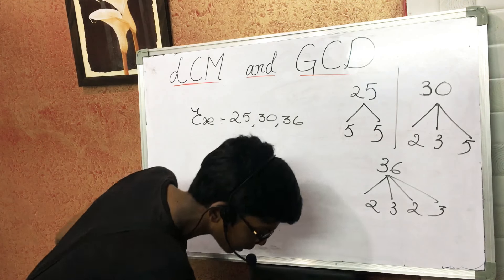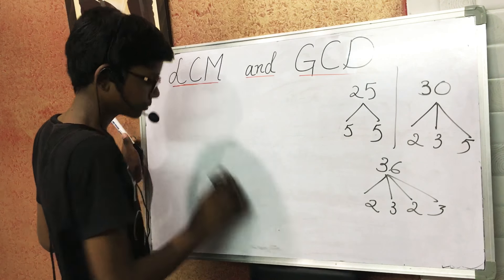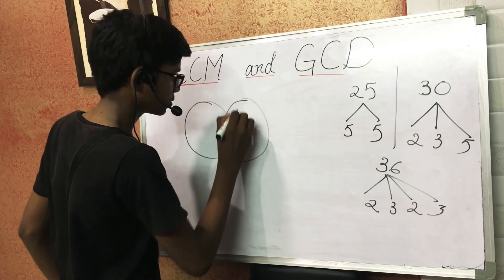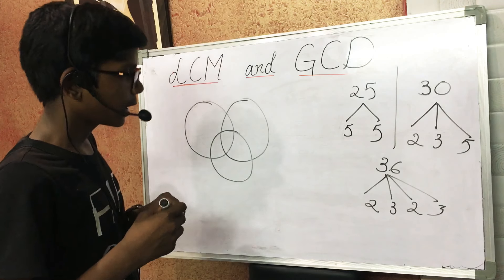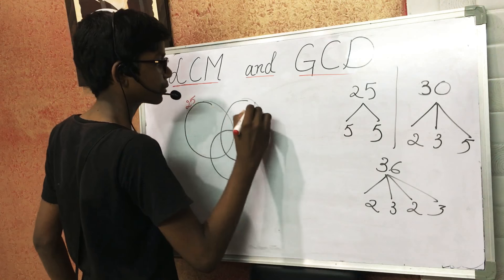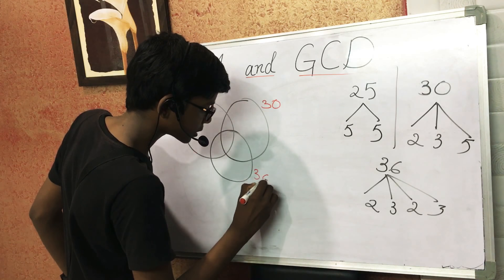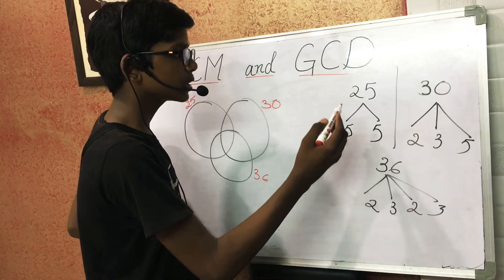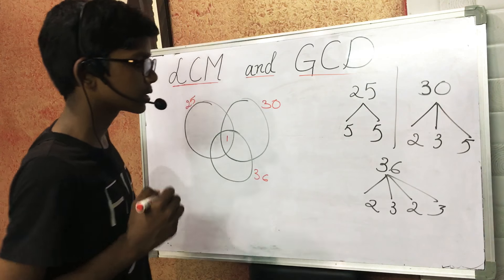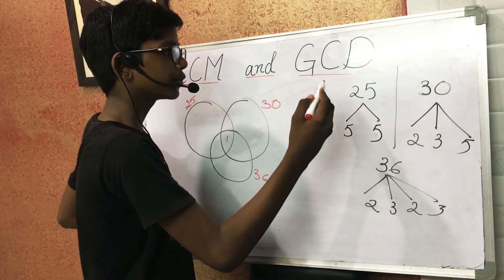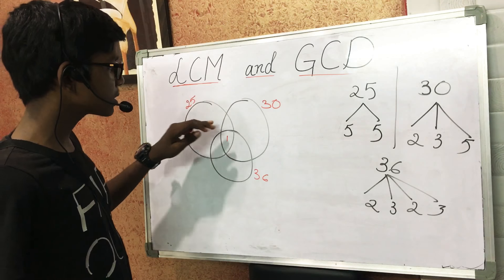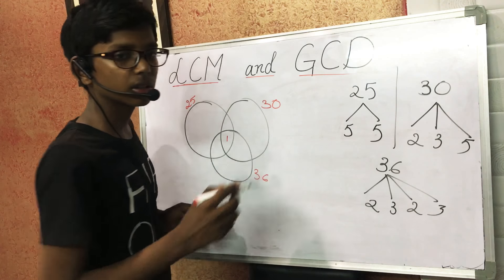Now, first let us draw three circles — like this. We will name these three circles as 25, 30, and 36. We should place the common factors of all three numbers in the common space at the center, and the common factors of each pair of circles in their respective overlapping spaces.